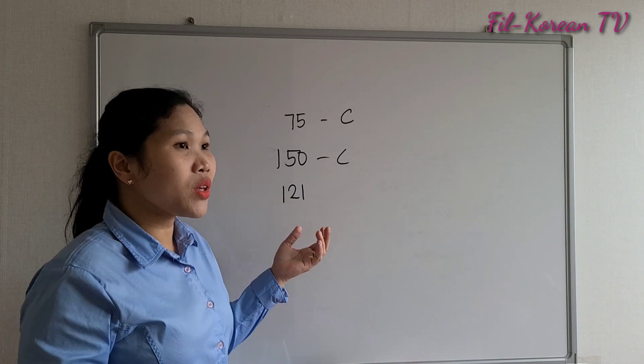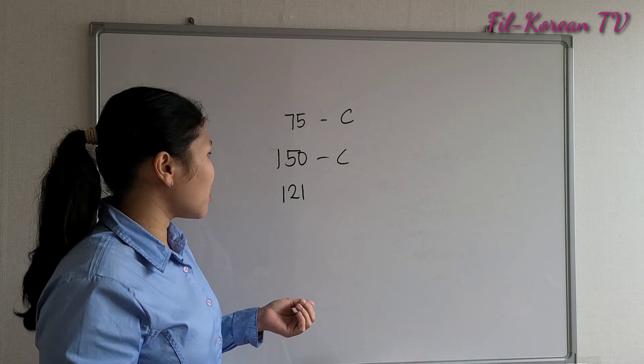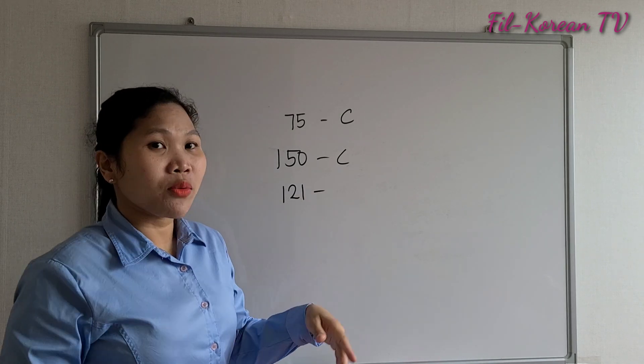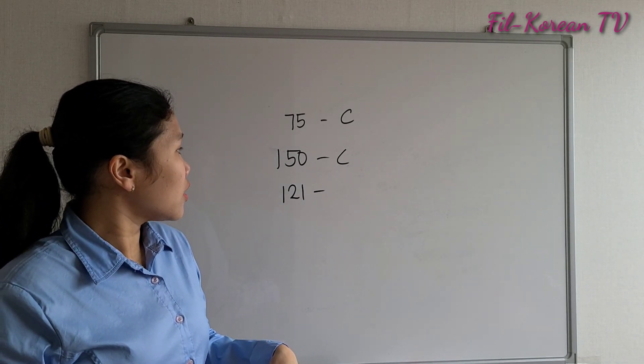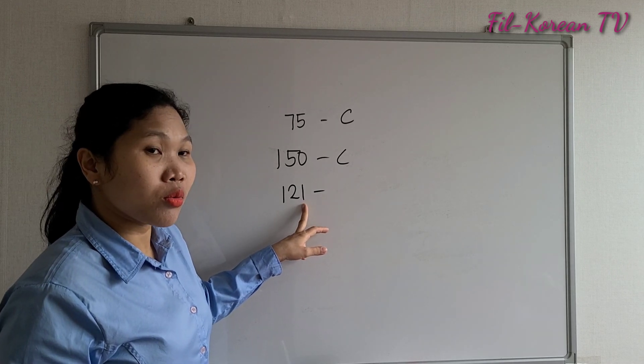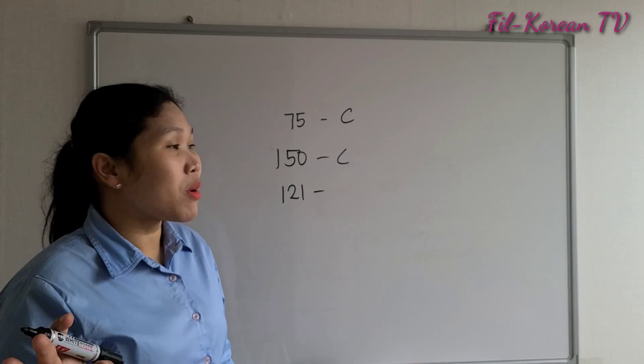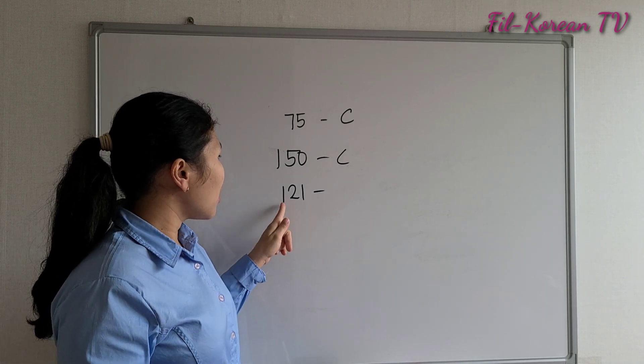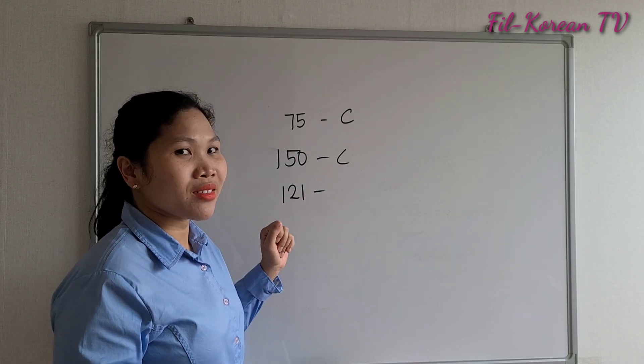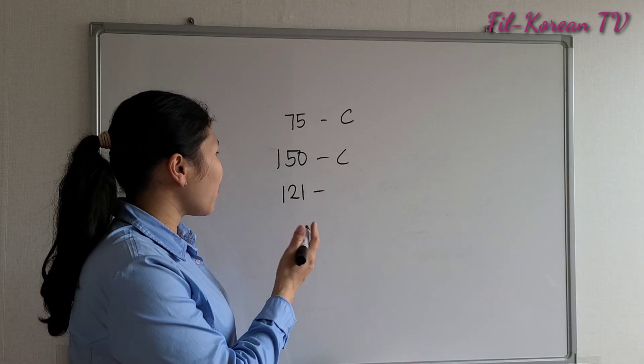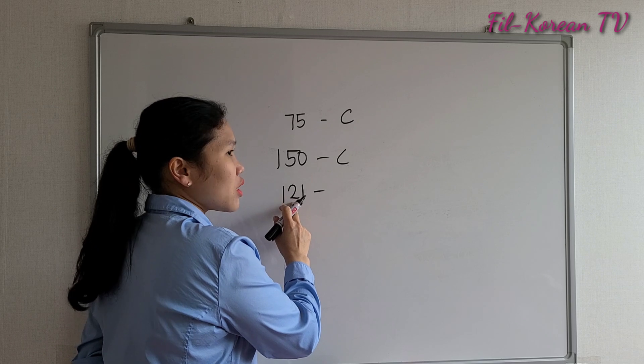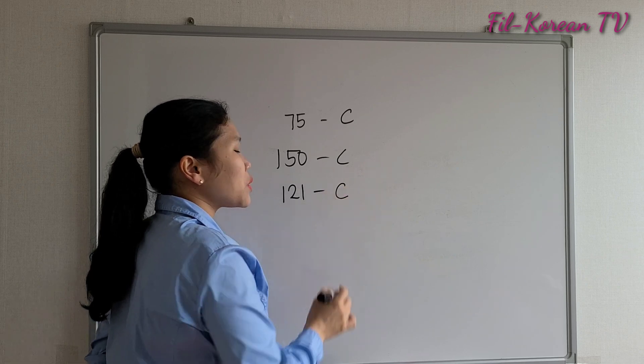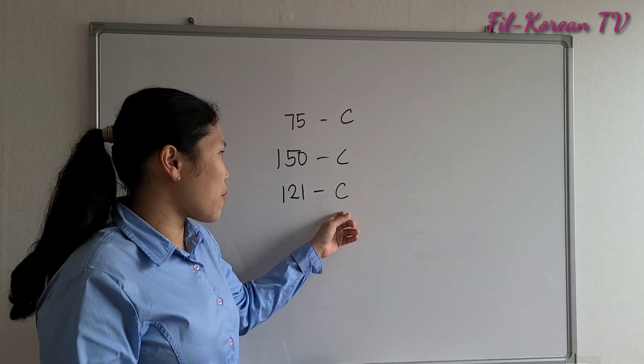One hundred twenty-one. Can we apply the divisibility rule? Yes, we can. One plus two plus one equals four. Not divisible by three or nine. If we double one, it is two minus two equals ten. Not divisible by seven. Then, let us check whether this number is divisible by eleven. One minus two plus one—that is the rule for divisibility. One minus two equals negative one. Negative one plus one equals zero. Ah, this is a composite. This is divisible by eleven, so this is a composite number.